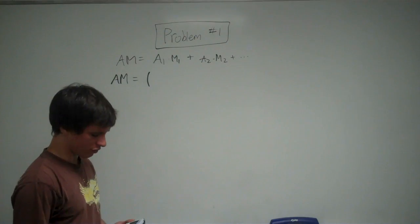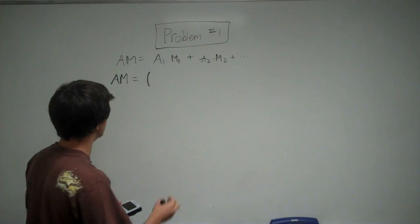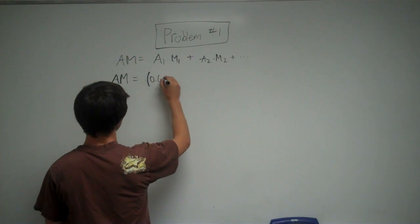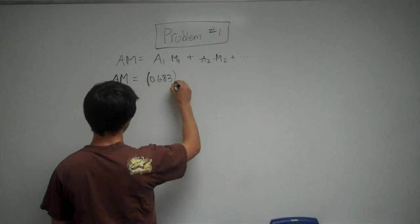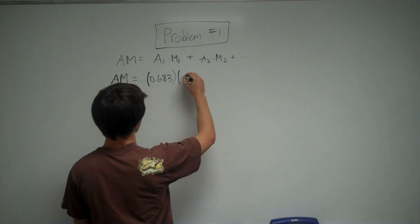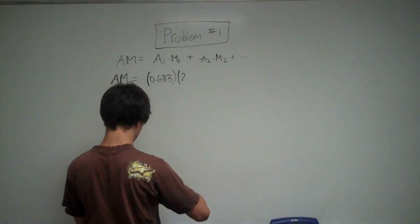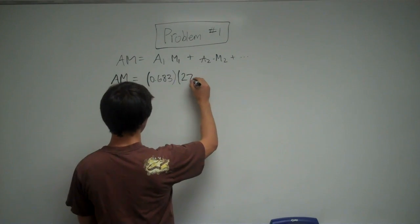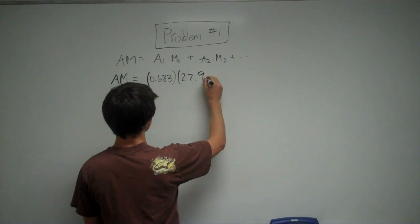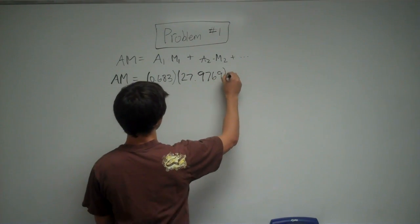So in this case, 68.3% for the first isotope is going to be 0.683 times the molar mass of 27.9769.